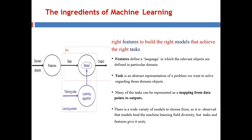Let us move to the ingredients of machine learning. The ingredients include: the features used to build the model, the training dataset used with the machine learning algorithm to construct the model, the data points, the output produced by the constructed model, and the task achieved using the model. As Peter Flach has rightly said, the right features are used to build the right model that achieves the right task. A feature defines a language in which the relevant objects are described in a particular domain — for example, a car object can have features like model number, manufacturing year, kilometers, etc.